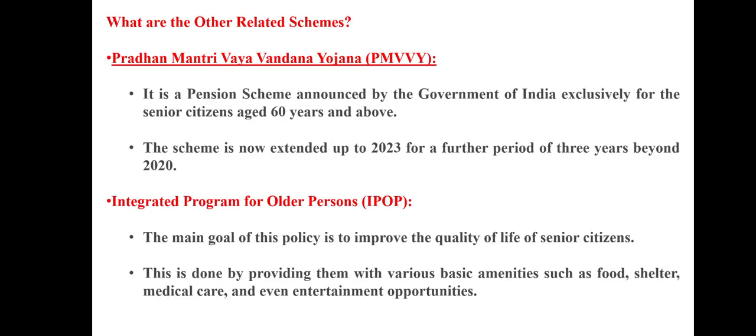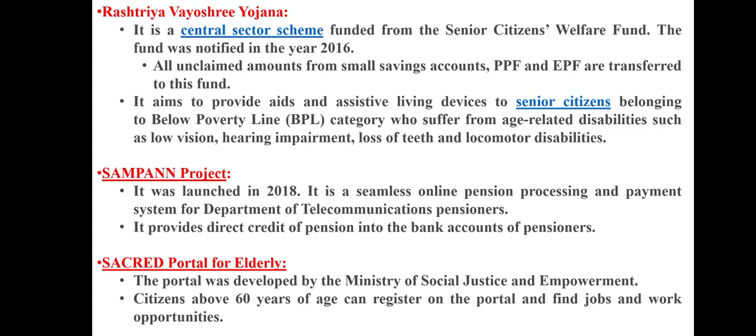Other key schemes include: the Pradhan Mantri Vaya Vandana Yojana (PMVVY), a pension scheme exclusively for senior citizens aged 60 years and above, extended up to 2023 for a further three years beyond 2020. The Integrated Program for Older Persons (IPOP) aims to improve the quality of life of senior citizens by providing basic amenities such as food, shelter, medical care, and entertainment opportunities. The Vayoshreshtha Sammaan/Vayu Shri Yojana is a central sector scheme funded by the Senior Citizen Welfare Fund — notified in 2016 — where unclaimed amounts from PPF and EPF are transferred. It aims to provide assistive living devices to BPL senior citizens suffering from age-related disabilities such as low vision, hearing impairment, loss of teeth, and locomotor disabilities.